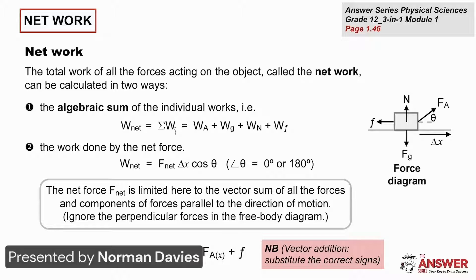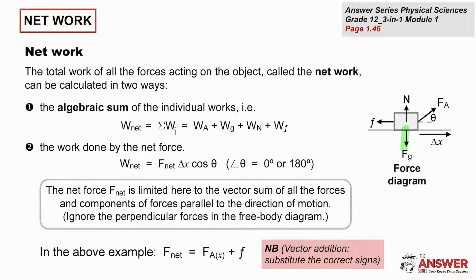There are two ways in which you can calculate the net work. If we have an object with forces — gravitational force, normal force, an applied force at an angle, and a frictional force opposing the direction of motion from left to right — then each of those forces could do work on that object. We can calculate the amount of work done by each force separately and then add those works together. We get something known as the sum of works, which provides us with the net work done on that object by those four forces during that motion.